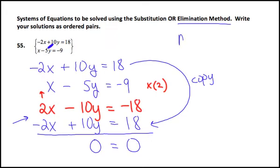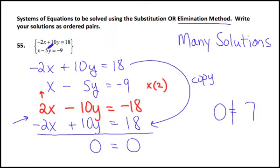That problem has many solutions. If I had gotten a statement at the end where I lost all the variables, but I didn't have a 0 on the right-hand side, I had some number over here, like a 7, when you get a statement like that that is not true, that one has no solutions whatsoever. So when you solve a system of equations, they either intersect, if you were to graph them, and they have one solution. They might be the same two lines, and so they lie on one another, and they have many solutions.